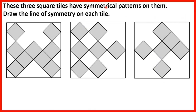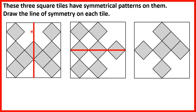These three square tiles have symmetrical patterns on them. Draw the line of symmetry on each tile. A line of symmetry is a line down the middle of a shape so that you have the same reflected on both sides. Our first line of symmetry is here because we could fold one side over so it completely covered the other side with nothing overlapping. For the second shape we have a horizontal line of symmetry. For the third shape we don't have a vertical or horizontal line of symmetry, but we do have a diagonal line of symmetry — we could fold one side over so it completely covered the other side.